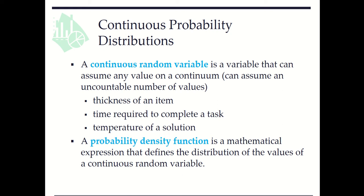A continuous random variable can describe, for example, thickness of an item, time required to complete a task, and temperature of a solution.